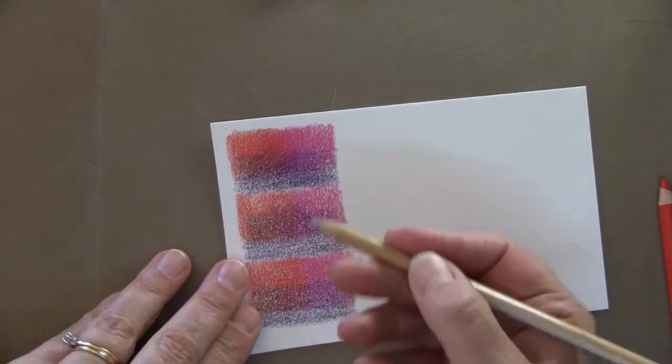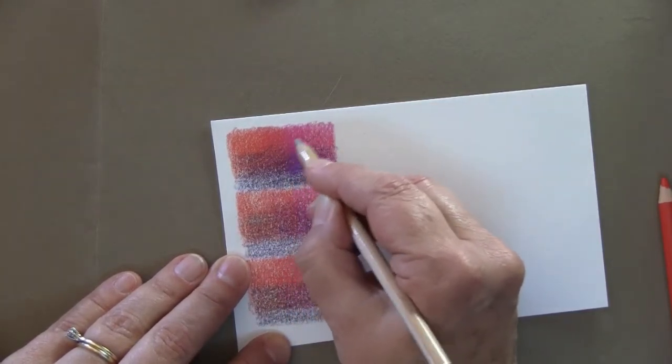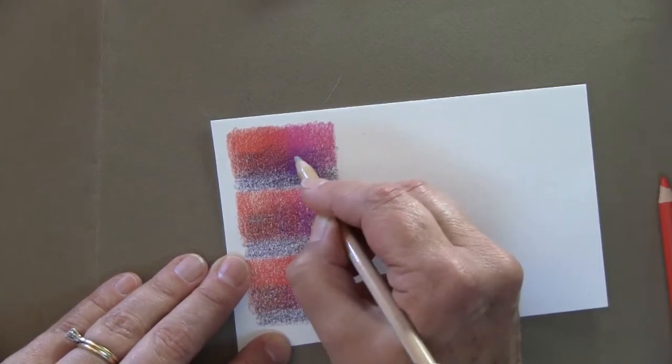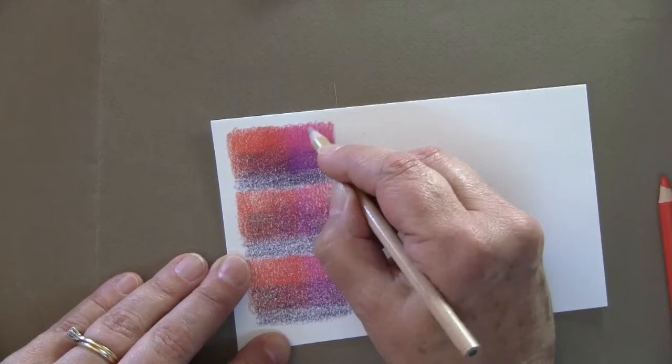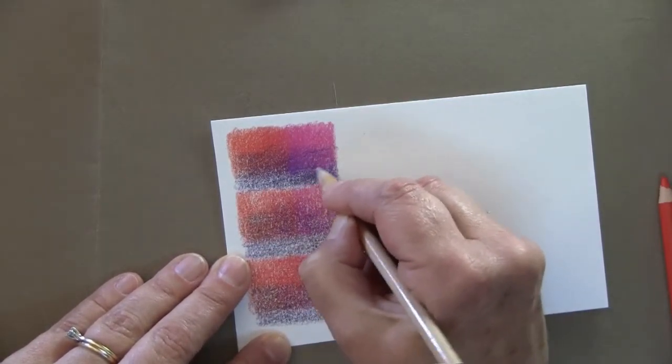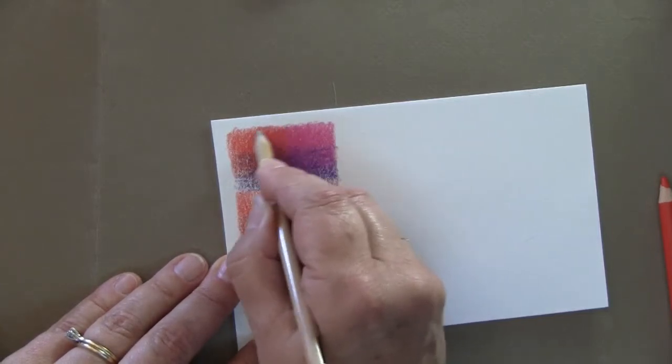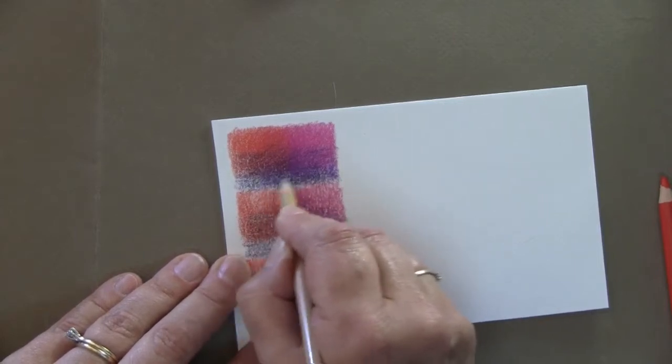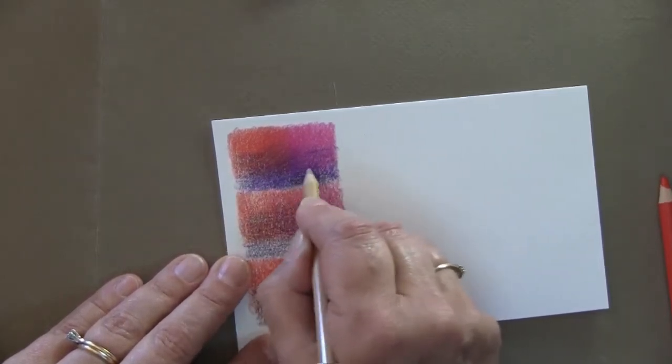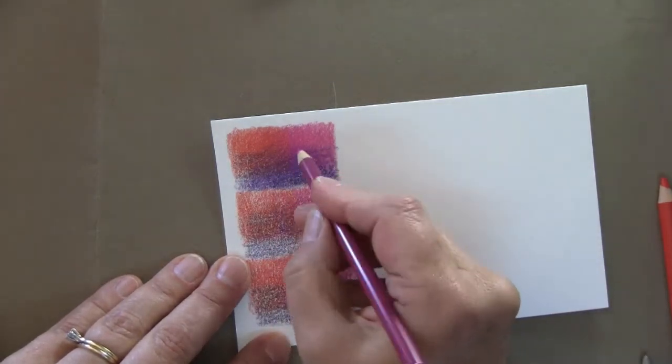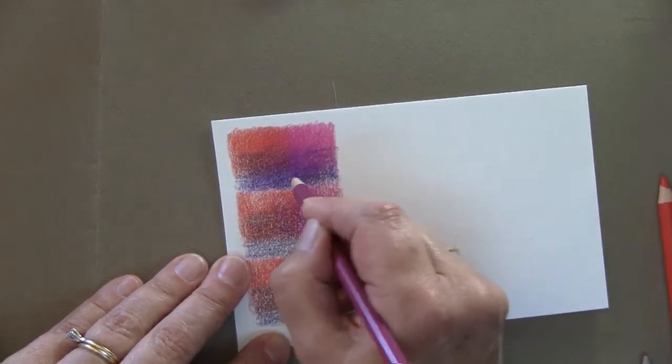Now for the colorless blender, which is just the wax, no pigment, it sort of unifies everything and smooths things out to a certain degree. It enhances the colors as well. And you can go back and forth again layering and filling out to get the look that you're going for.